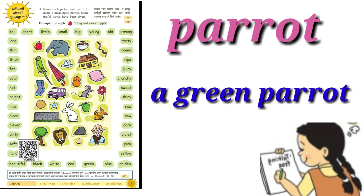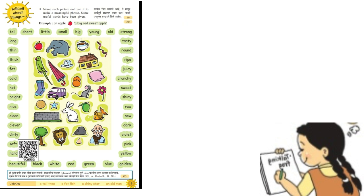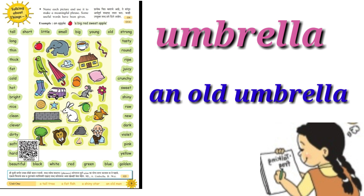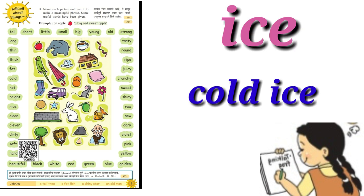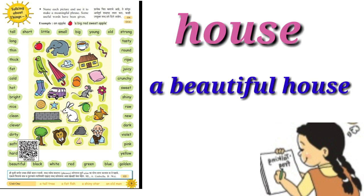Parrot — a green parrot. Umbrella — an old umbrella. Eyes — cold eyes. House — a beautiful house.